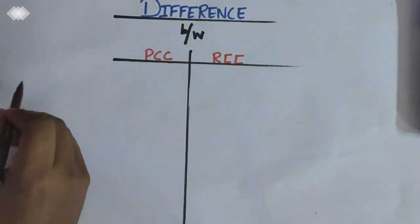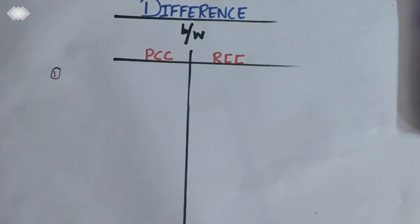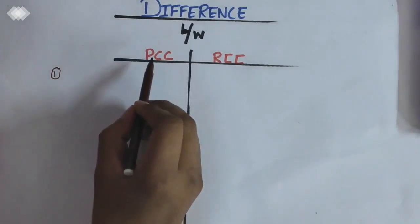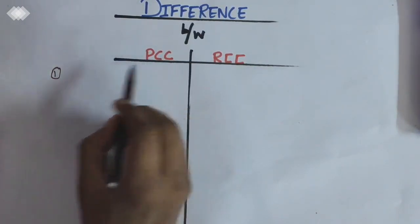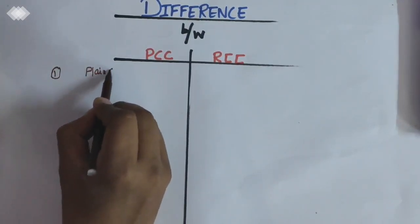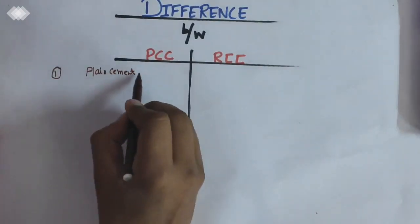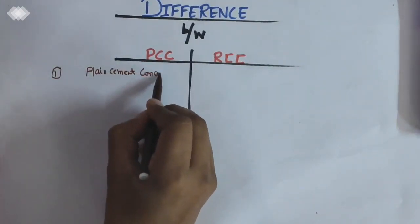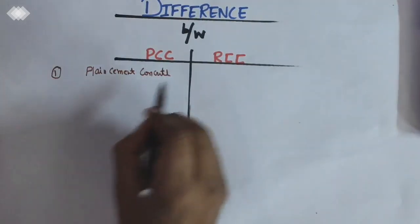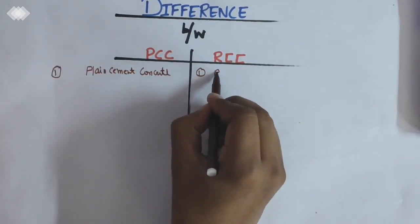Whenever you go for an interview, you must know these terms. On the basis of difference, I'm indicating the serial number here and the point of difference. First, you should know what is the meaning of PCC. PCC means plain cement concrete.